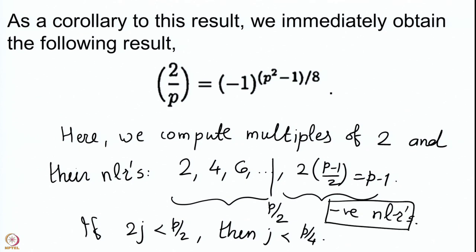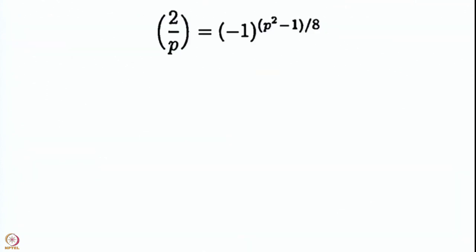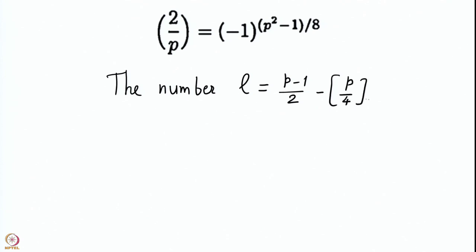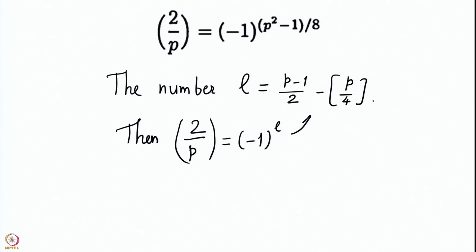All multiples beyond the integral part of p/4 give negative numerically least residues, so those are the only positive ones. We remove the integral part of p/4 from the total number of multiples. Thus L equals (p-1)/2 minus the integral part of p/4, and the Legendre symbol (2/p) is (-1)^L.